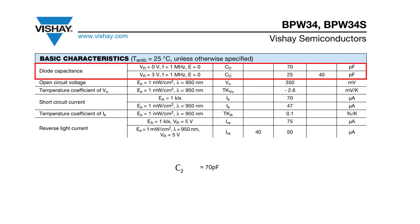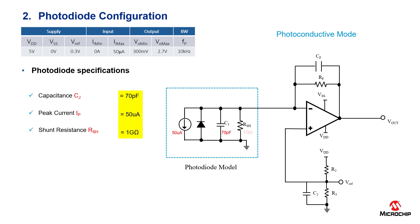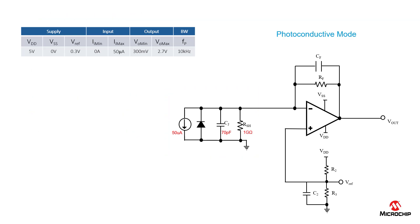The diode capacitance is at 70 picofarads. The peak current at maximum light intensity is 50 microamps, and for the shunt resistance, a typical value for a type of circuit like this is 1 gigaohm. One thing to note is that in some data sheets, it's a little more difficult to find these values, so you might have to look at a graph instead of a number on a table.